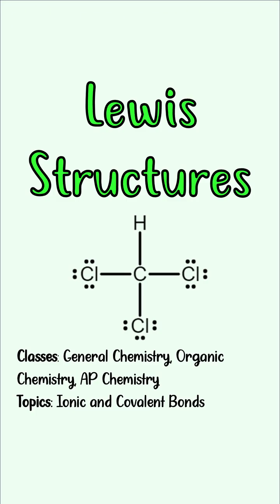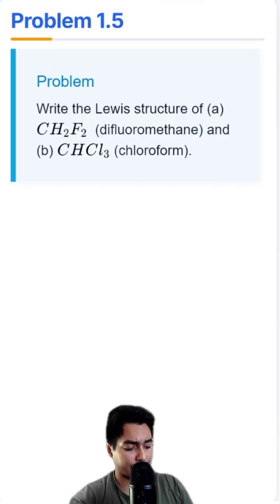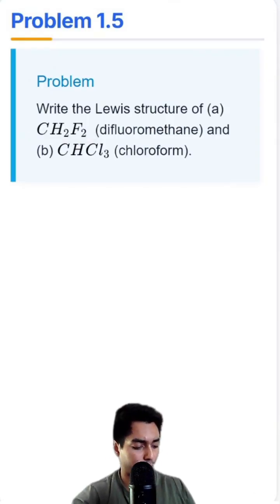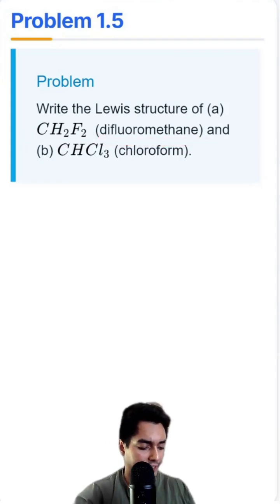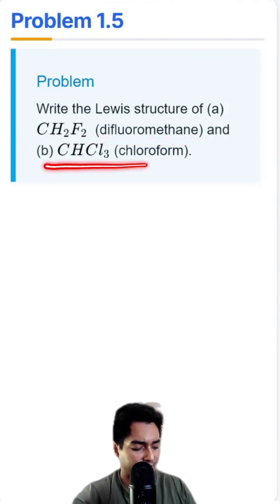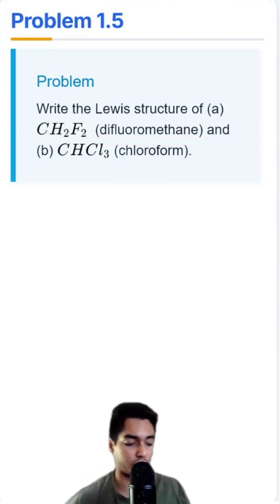Do you know how to draw Lewis structures? Write the Lewis structure of CH2F2, which is difluoromethane, and CHCl3, which is chloroform.